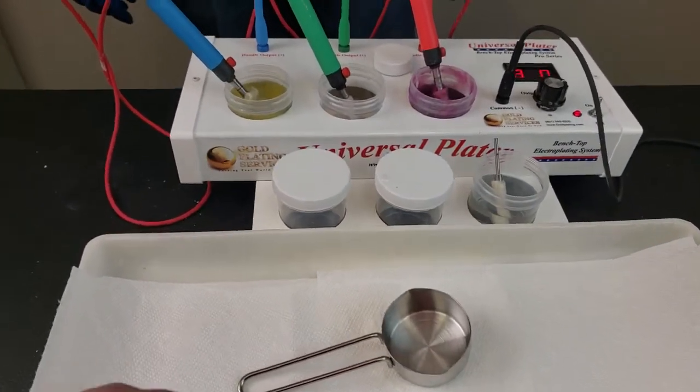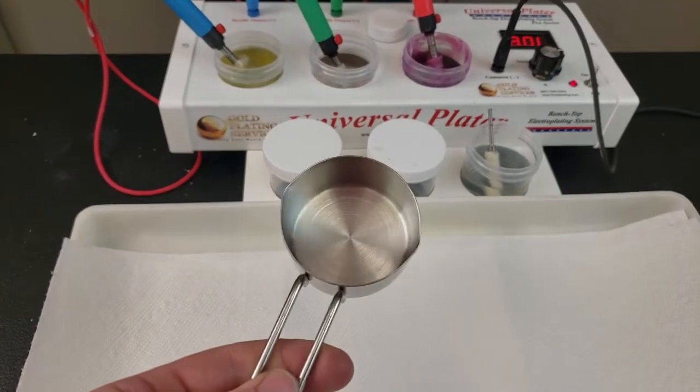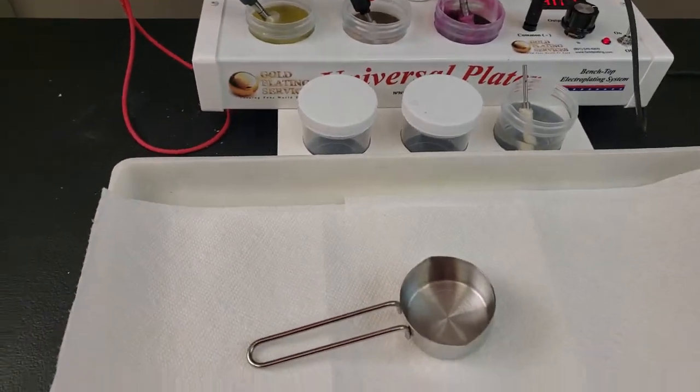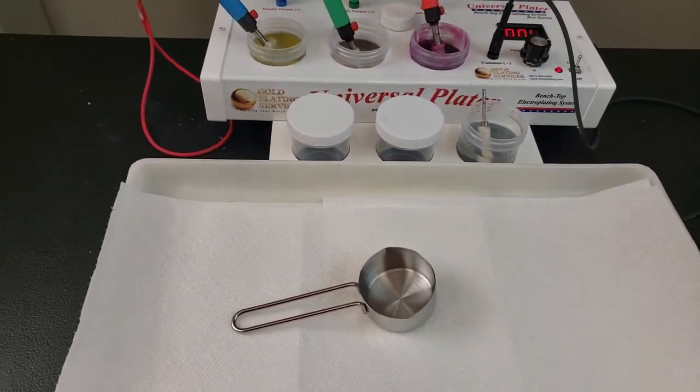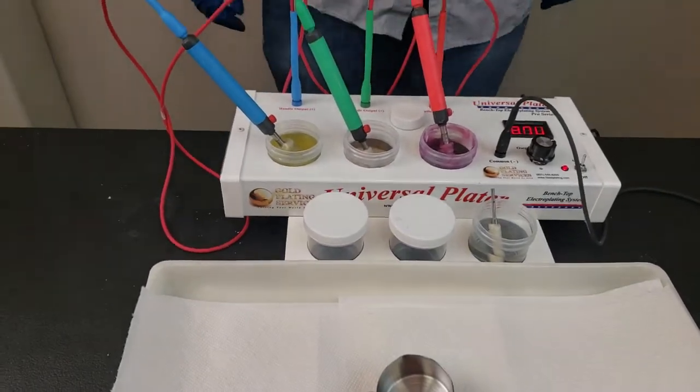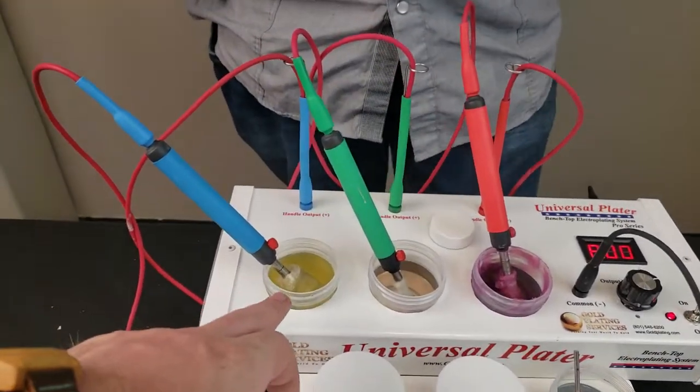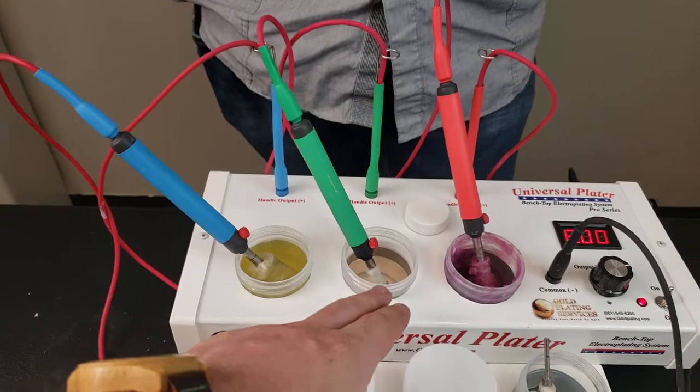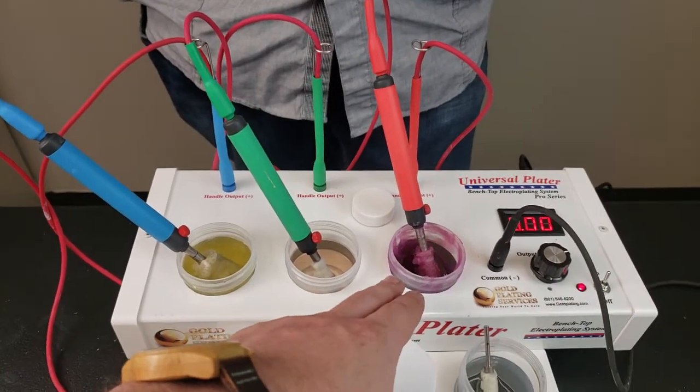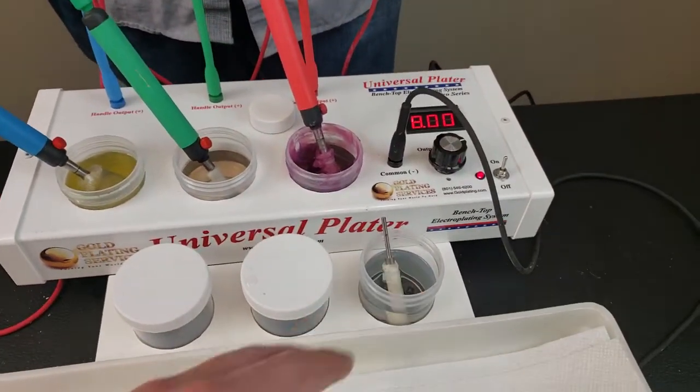We got just a standard kind of stainless steel measuring cup, and to plate it we're going to be using four different solutions: our ElectroClean, TriVal, our gel brush gold, and our rose gold solution.